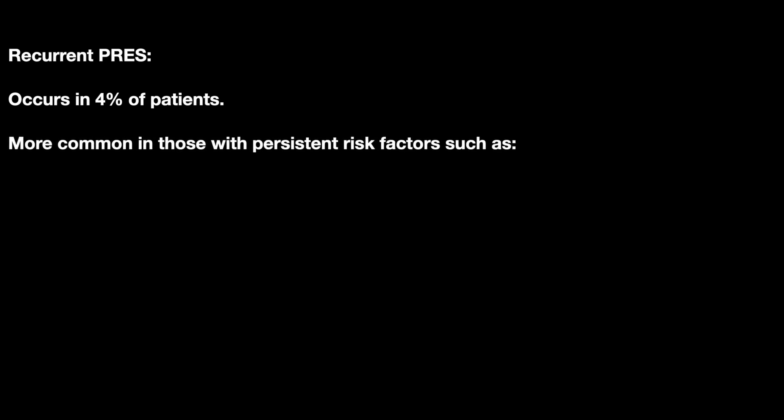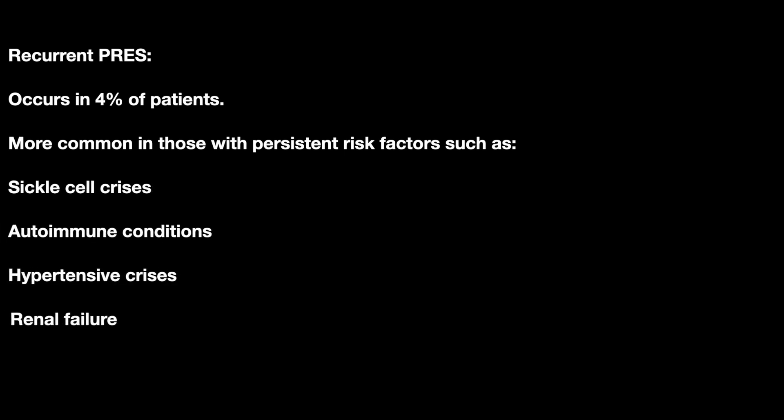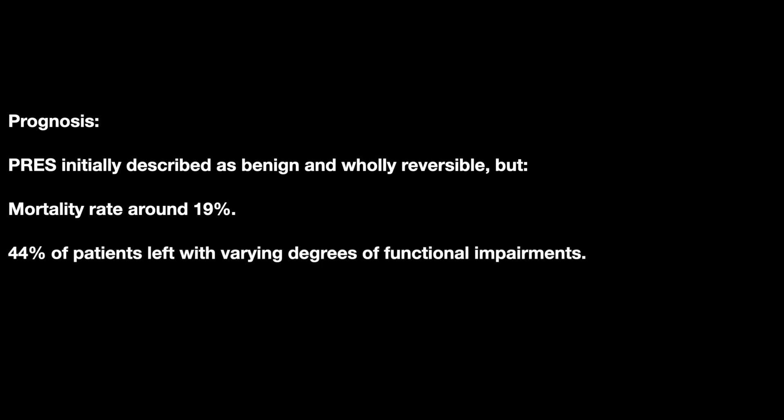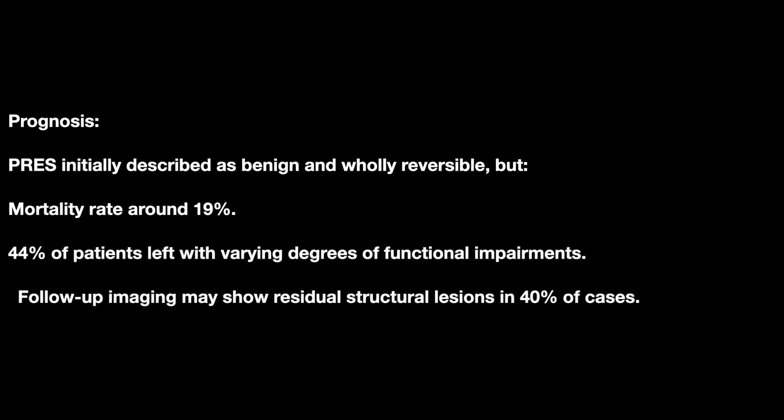Once through the acute phase, long-term management must be considered. The chance of recurrent PRES is 4%, more common in patients with persistent risk factors like sickle cell crisis, autoimmune conditions, hypertensive crisis, renal failure, and mitochondrial disorders. Prognosis is described as benign and wholly reversible, but mortality is around 20%, and 44% of patients are left with varying degrees of functional impairment.